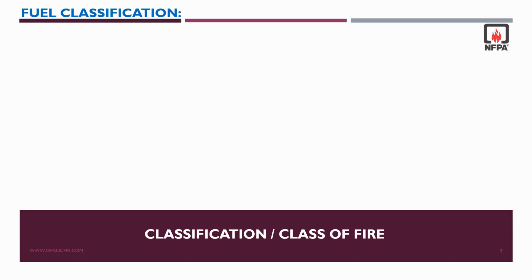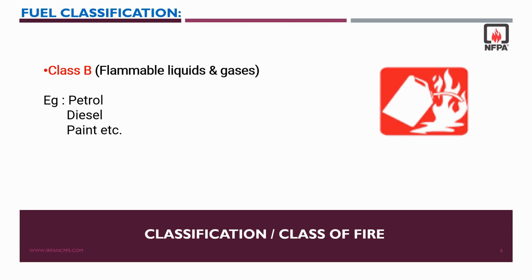Class B fires are fires in flammable and combustible liquids and flammable gases. For example, petrol, diesel, paints, oil-based paints, petroleum greases, solvents, alcohols, tars, oils — everything comes under Class B fires.